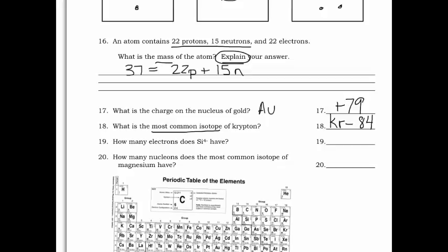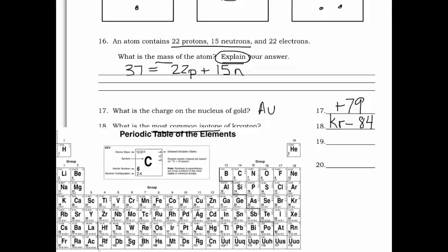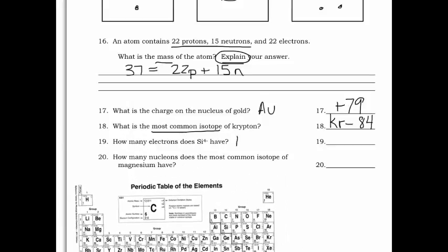Number 19: how many electrons does Si⁴⁻ have? Remember, electrons are negative, so this ion must have gained 4 extra electrons. Silicon normally has 14 electrons matching its 14 protons. It gained 4, so it now has 18 electrons.